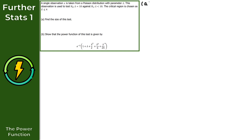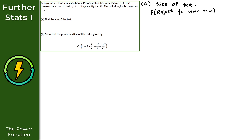To find the size of the test, recall that this is equal to the probability that we reject H0 when it is true. We would reject H0 when we are within the critical region, which is X less than or equal to 4. So if X follows a Poisson distribution with parameter 10 — assuming H0 is true, our parameter is 10 — then the size is equal to the probability that X is less than or equal to 4, given that X follows a Poisson distribution with parameter 10.